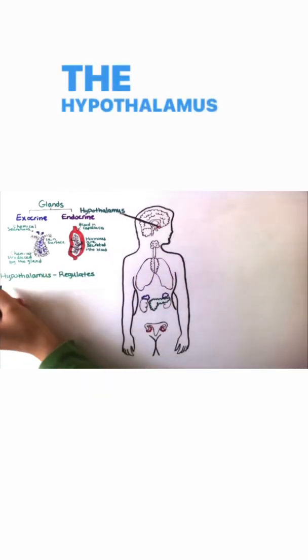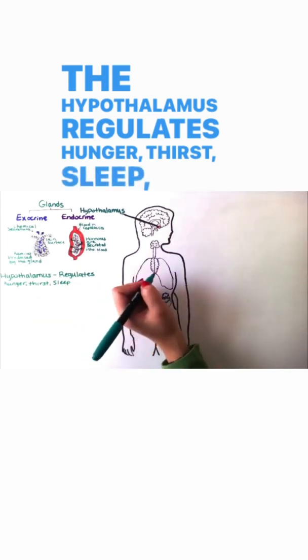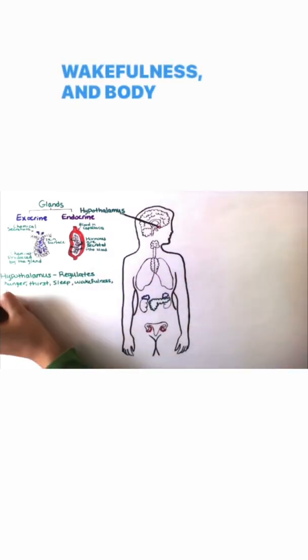The hypothalamus regulates hunger, thirst, sleep, wakefulness, and body temperature.